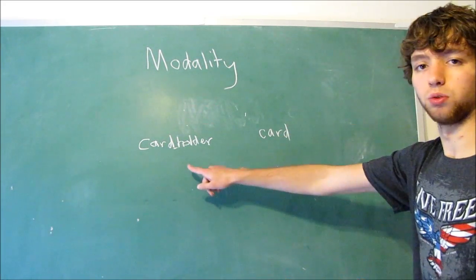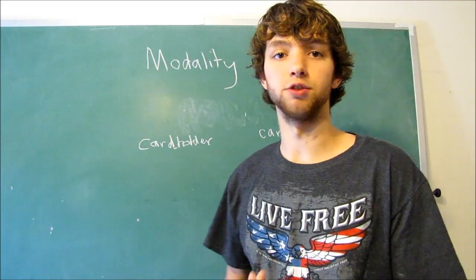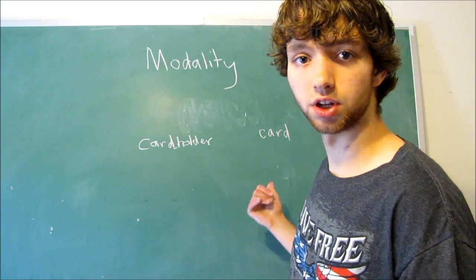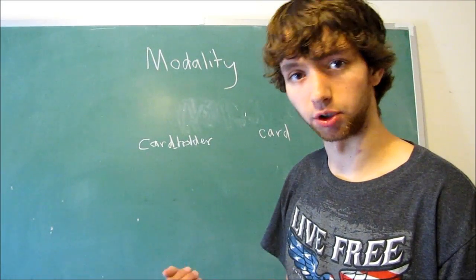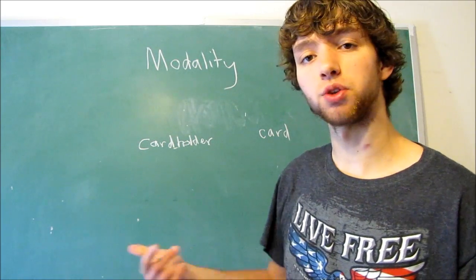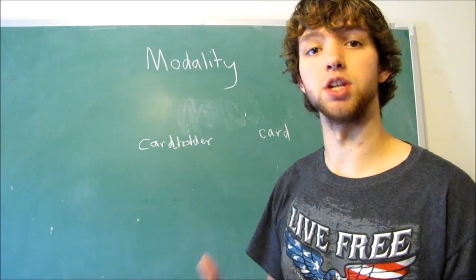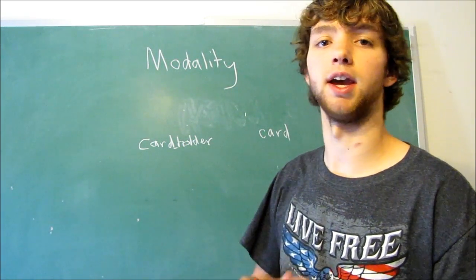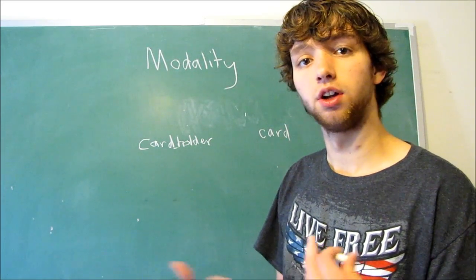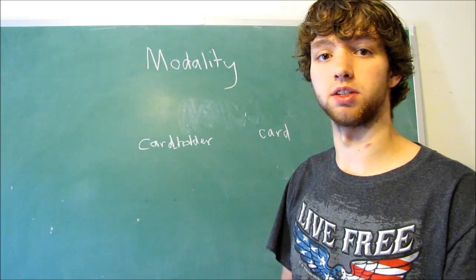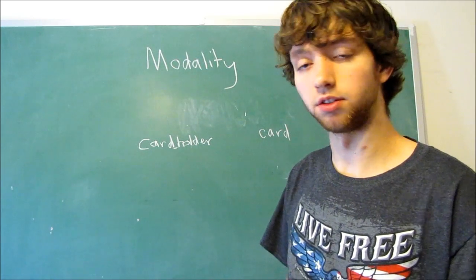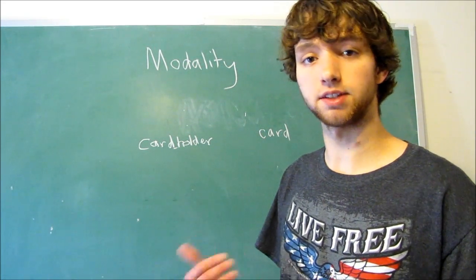Obviously, the card holder, the ID for the card holder, the person who owns the card or buys the card from the credit card company, they're going to have an ID, and that's going to be a not null column, meaning it has to have a value. That is obvious because it's going to be the primary key, surrogate primary key, and it has to have a value.